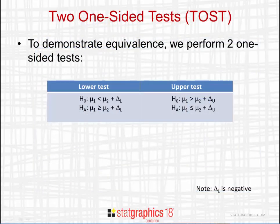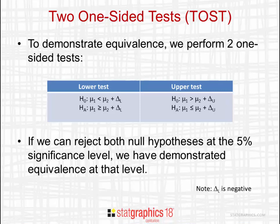The most common way to demonstrate equivalence is to perform two one-sided tests (TOST). We perform a lower test where the null hypothesis is that the first mean is less than mu2 plus delta L, and an upper test where the null hypothesis is that the first mean is greater than mu2 plus delta U. If we can reject both null hypotheses at the 5% significance level, we will have demonstrated equivalence at the 5% level.